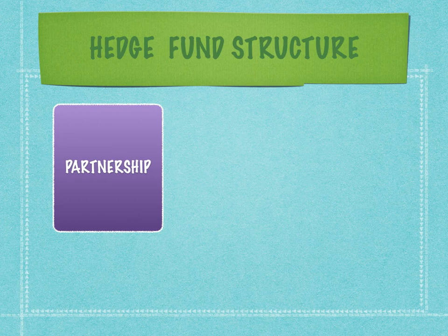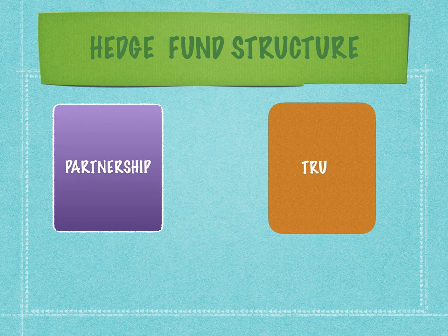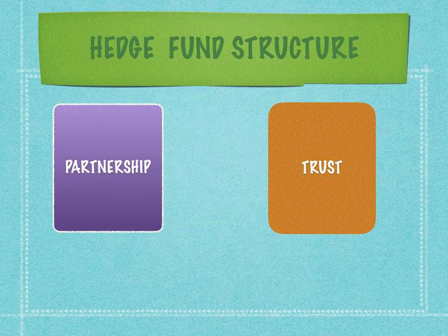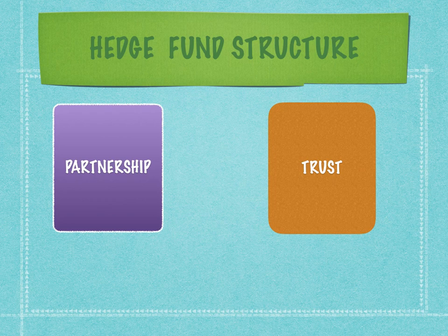Hedge funds in the United States or in the European Union are broadly structured either as a partnership or as a trust. In a partnership, partners come together, set up the business, contribute to the capital, and get an entitlement of proportionate profits and other distributions. Similarly, in a hedge fund structured like a partnership, partners contribute capital and get entitlements as per the proportionate allocation of their contribution. This partnership is formalized by a partnership agreement, which is extremely rigorous regarding entitlements and allocations.